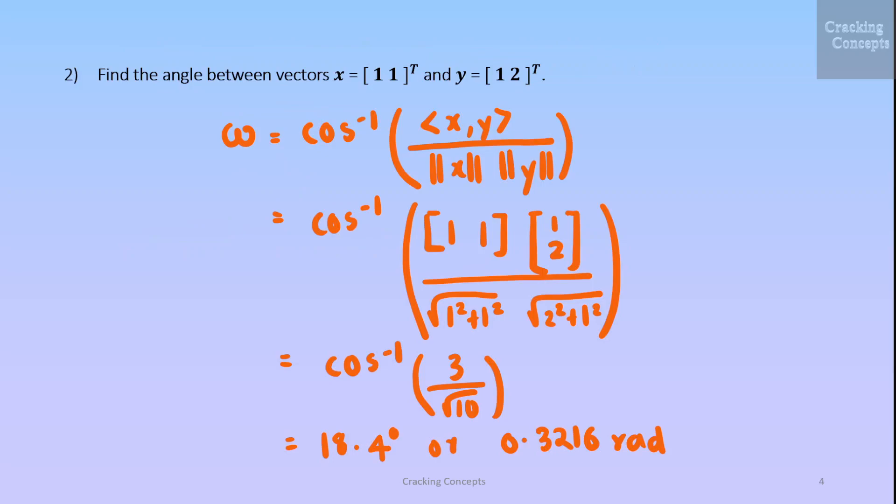Now the second question is we are asked to find the angle between the vectors x and y. We already know the formula which is omega equals cos inverse of inner product of xy by norm of x times norm of y. So inner product of xy is given by x transpose y. So we take the transpose of this vector multiplied by this vector divided by taking the norms.